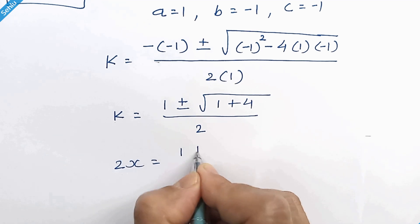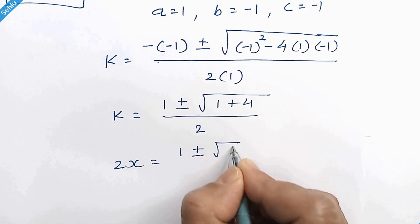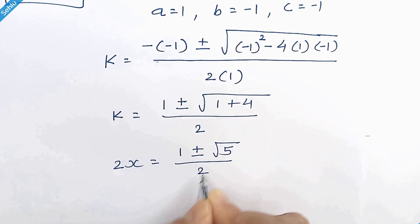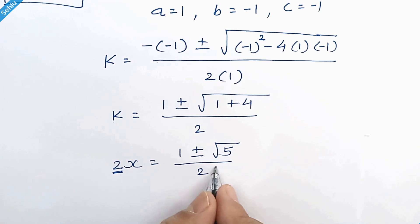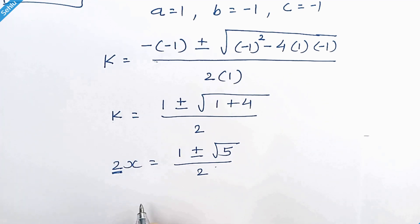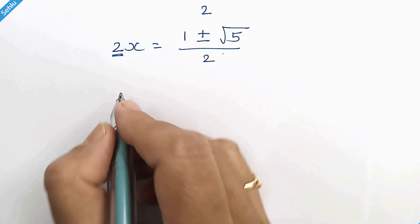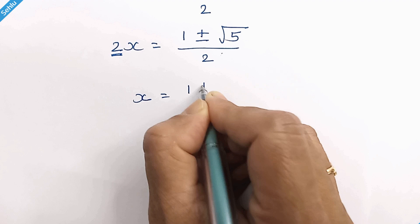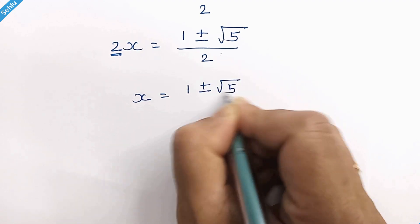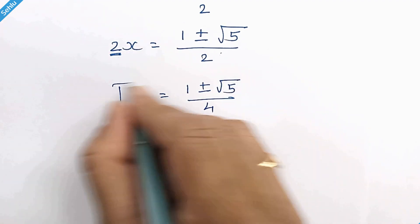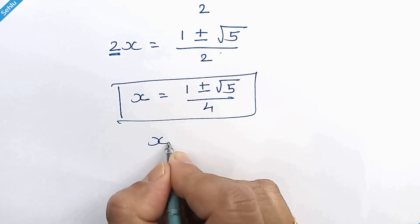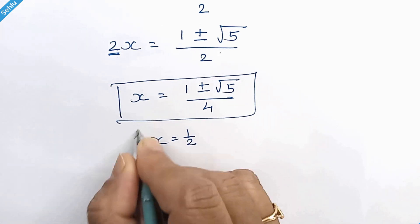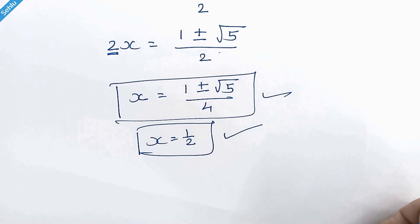Move this 2 to the right hand side, so it will be x is equal to 1 plus or minus square root of 5 over 4. So these are the answers.